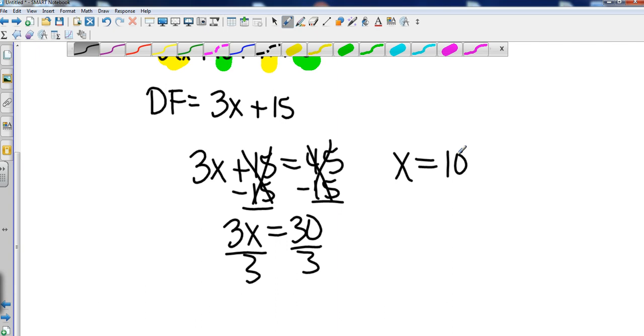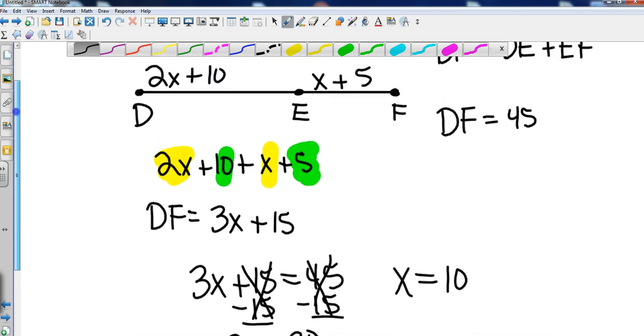Then we could go back and we could figure out each individual length as well. So this would be 2 times 10 plus 10, and this would be 10 plus 5, giving us smaller segments of 15 and 30.